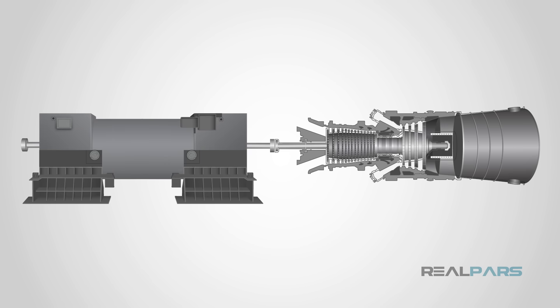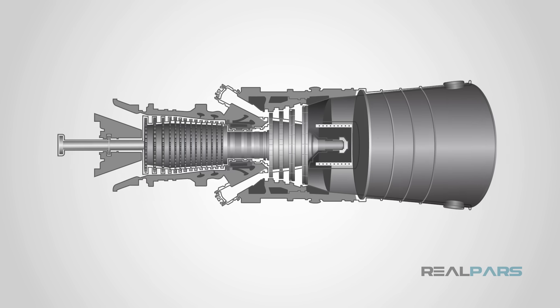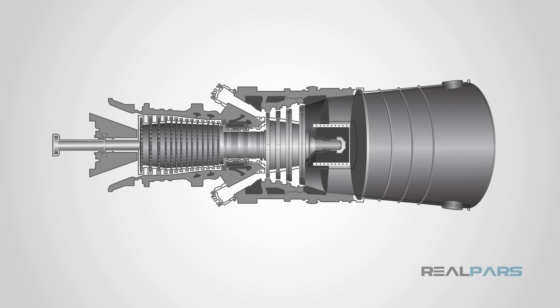Now I have a prime mover for my generator in the above power plant example. Also, this prime mover concept can be used in different applications like turbo compressors or similar. Now that I have the basics of gas turbines, let's focus on a modern gas turbine and its components.